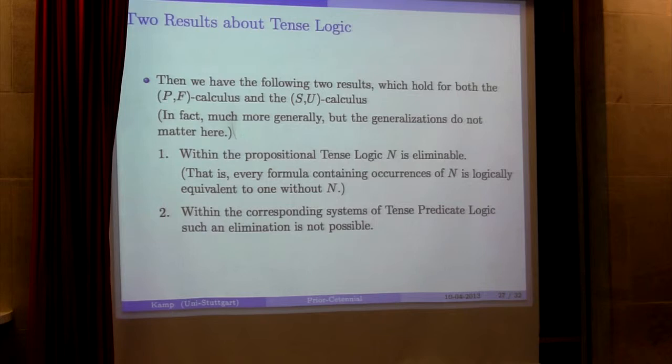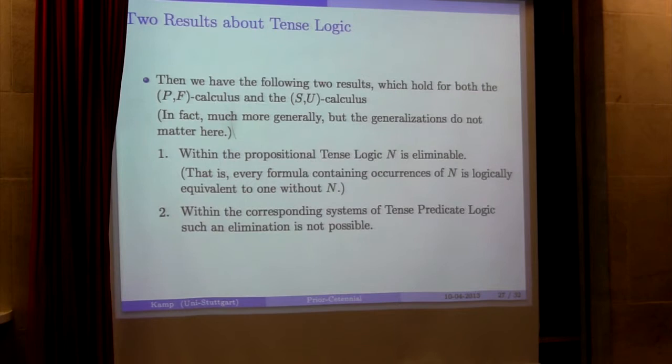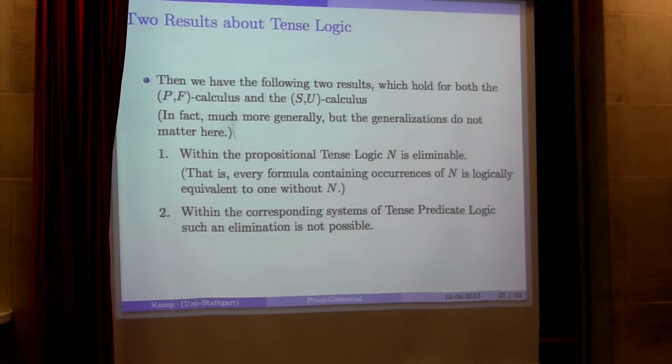Now, that some operators that are not there as primitives, not P and F themselves, can be expressed is clear. Perhaps the most famous examples that everybody takes for granted—having the operator 'it will always be the case that,' H, that can simply be expressed as the dual of 'it was the case that' and 'it will be the case that.' That's a very simple example, but also much more complicated temporal relations—temporal operators of one or more, two or three or more places—can be expressed in this calculus by means of formulas using the primitive operators.